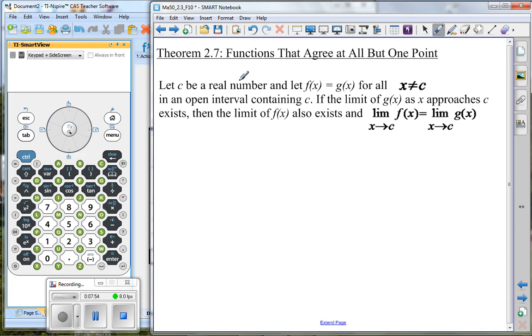Let c be a real number. Let f(x) equal g(x). Now keep in mind, this means that the output of f(x) equals the outputs of g(x) for everything except x equaling that value c. In an open interval, we haven't talked about an open interval. An open interval would be one that contains the letter c but does not include the letter c.